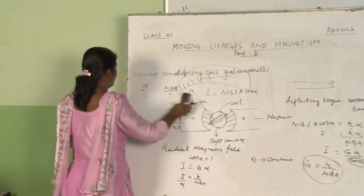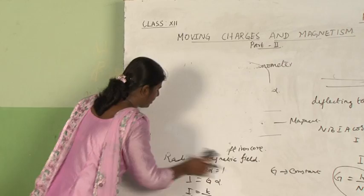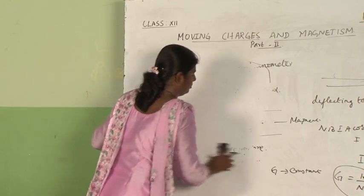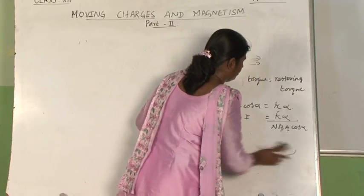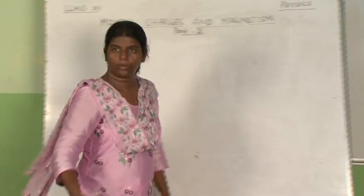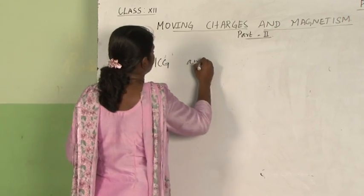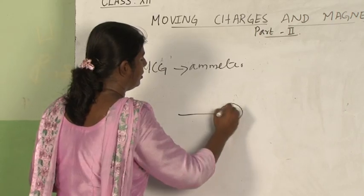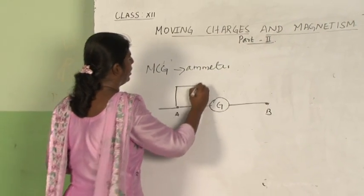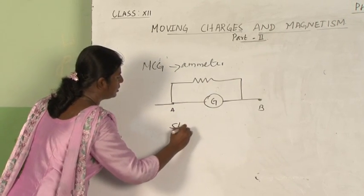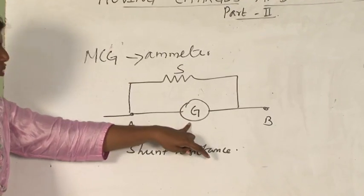Now we will see how to convert the moving coil galvanometer into ammeter and voltmeter. First we are going to convert the moving coil galvanometer into ammeter. Take this as your galvanometer G. Here along the current path A to B, you connect a shunt resistance. Shunt is the small resistance connected in parallel to the galvanometer.